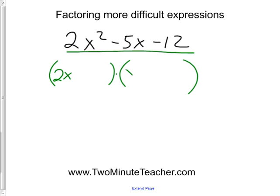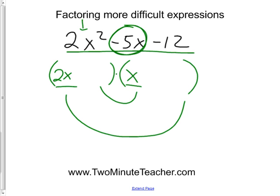That would give me this expression. All right, so I need a 2x and an x because that times that makes things to equal that. And then I do the outside and the inside multiply to make negative 5, and that's really important. And this negative 12 here, it tells me these two numbers have to multiply to negative 12.